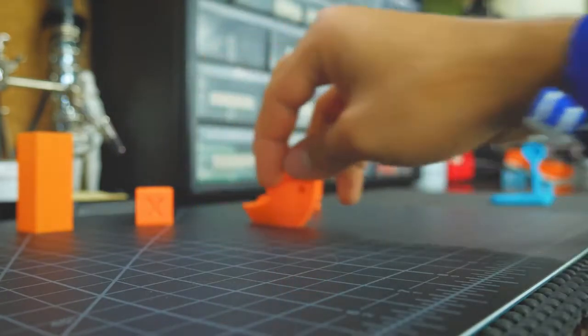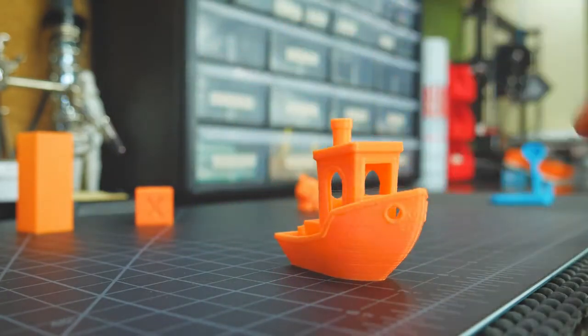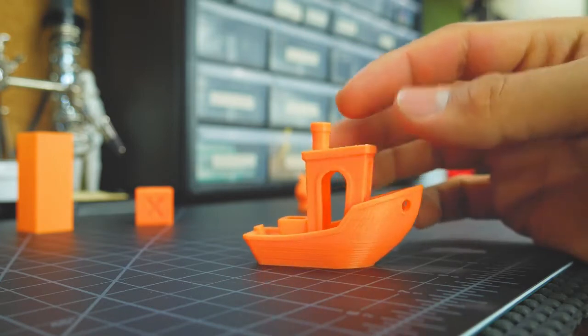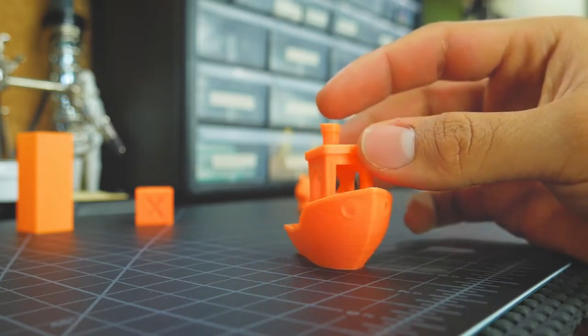All details, overhangs, and bridges were made with no trouble. There was no stringing present, which is also very good. So as expected, it prints just like normal PLA.